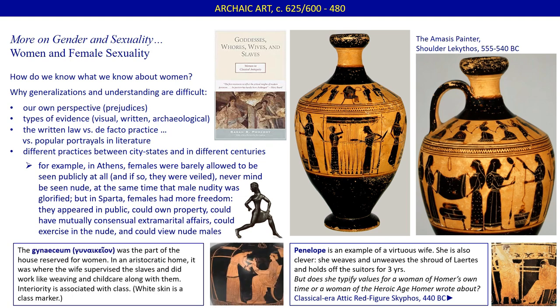The gynaeceum was the part of the house reserved for women. In an aristocratic home, it was where the wife supervised the slaves and herself did work like weaving and childcare along with them. Interiority is associated with class — whiteness of skin is a marker of class for women since being kept indoors shields them from the sun. Out of the house, married women typically wore a veil to shield them from the immodest gazes of other men — or perhaps more accurately, to shield their husbands from having other men look at their wives. The veil was certainly a sign of class, but like being kept indoors, not a very liberating one.